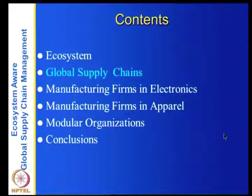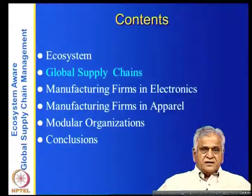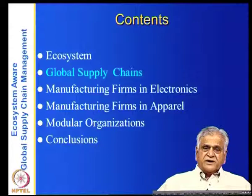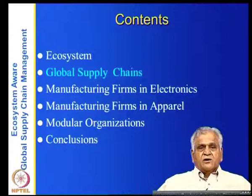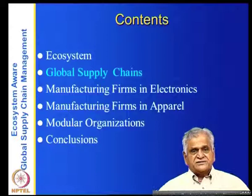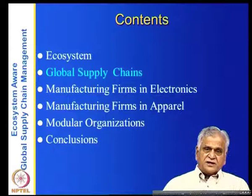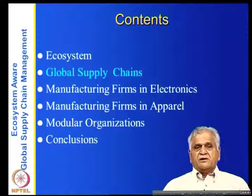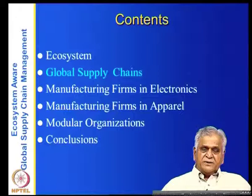In terms of the contents, we will present the ecosystem and then talk about global supply chains. We will also take two examples — electronics and apparel — and look at the various types of contract manufacturing firms that have evolved because of the globalization of manufacturing supply chains. Finally, we look at modular organizations: since globalization is driven by modularization of products, is it possible to have organization structures that are also modular?